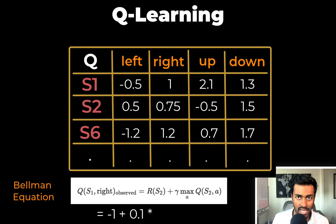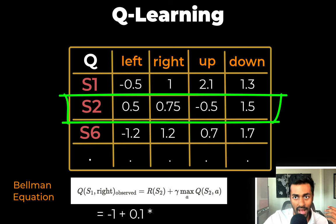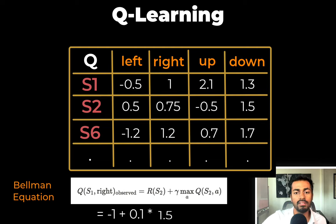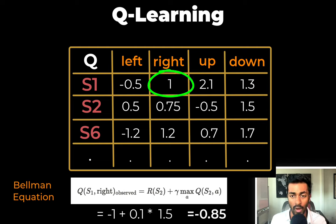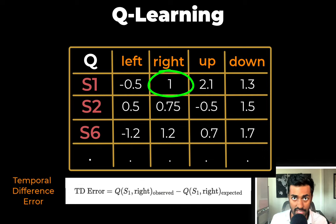And then we multiply that by the maximum possible Q value that we can get from state S2. Now looking at our Q table, we can see that we get the maximum Q value by going down from the state S2, which is 1.5. So substituting 1.5 in our equation, we'll get the overall Q value as negative 0.85. This is the observed value for Q1, state S1, and going right. But the value at the table for this specific Q value is 1. So it's clearly a difference.